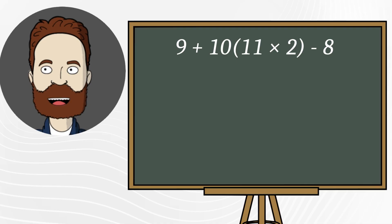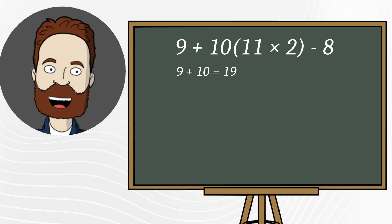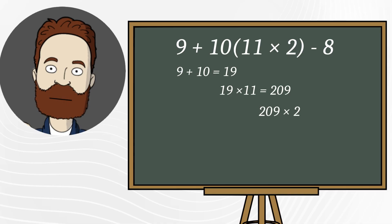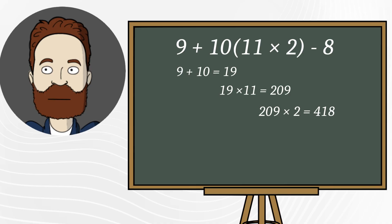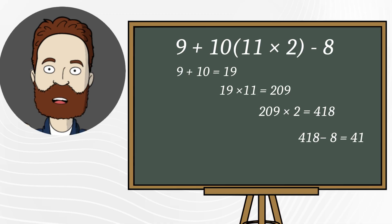Very often, people solve it like this. First, they add 9 plus 10 and get 19, then they multiply 19 by 11 and get 209, next they multiply 209 by 2, which gives 418, finally they subtract 8 from 418 and get 410.